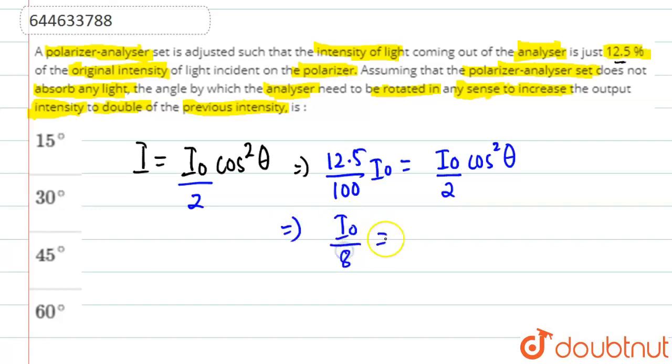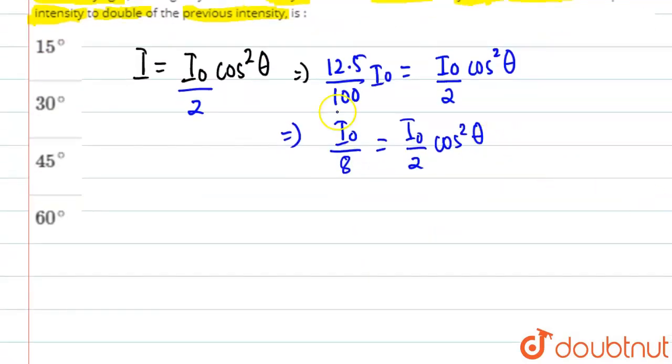What we get from here is I₀/8 will be equal to (I₀/2)cos²θ.